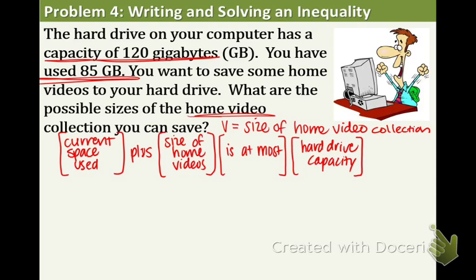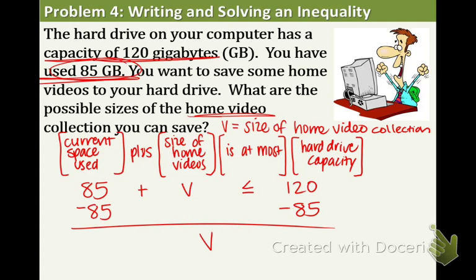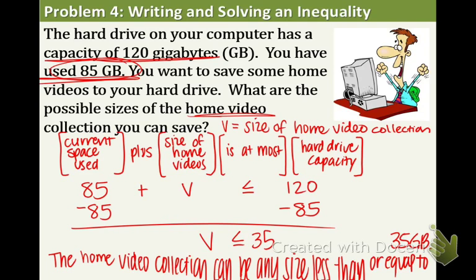Now let's fill in our givens. We already know that we used 85, so that's going right here. Plus means addition. Size of home videos, we do not know, that's the v. 'Is at most' is less than or equal to because it cannot go over the capacity, so it has to be less than or equal to the capacity, and the capacity is 120. There's our inequality right there. There's only one step to solving it. We're going to subtract the 85 because it's positive originally. V is less than or equal to 35. So our conclusion sentence is that the home video collection can be any size less than or equal to 35 gigabytes. Make sure you jot down that conclusion sentence.